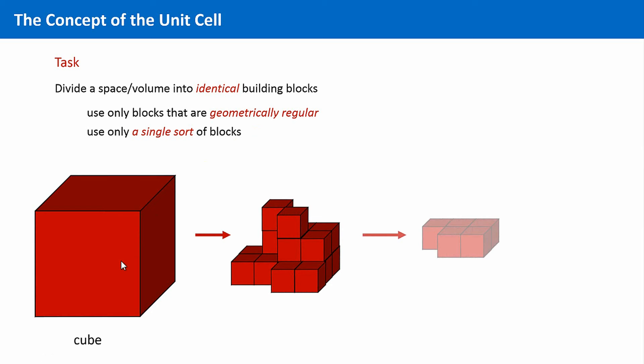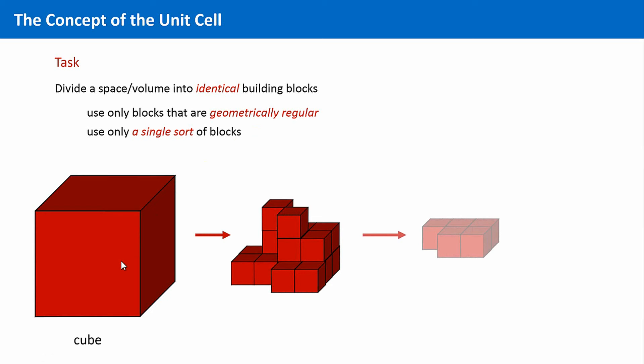Well, I think a quite natural approach is to divide this big cube into a lot of smaller cubes. So, the deconstruction process ends with such a tiny cube over here. And a cube is characterized by the length of the edges, they are all the same, A equals B equals C, and the angles between the faces, which are all orthogonal, 90 degrees.